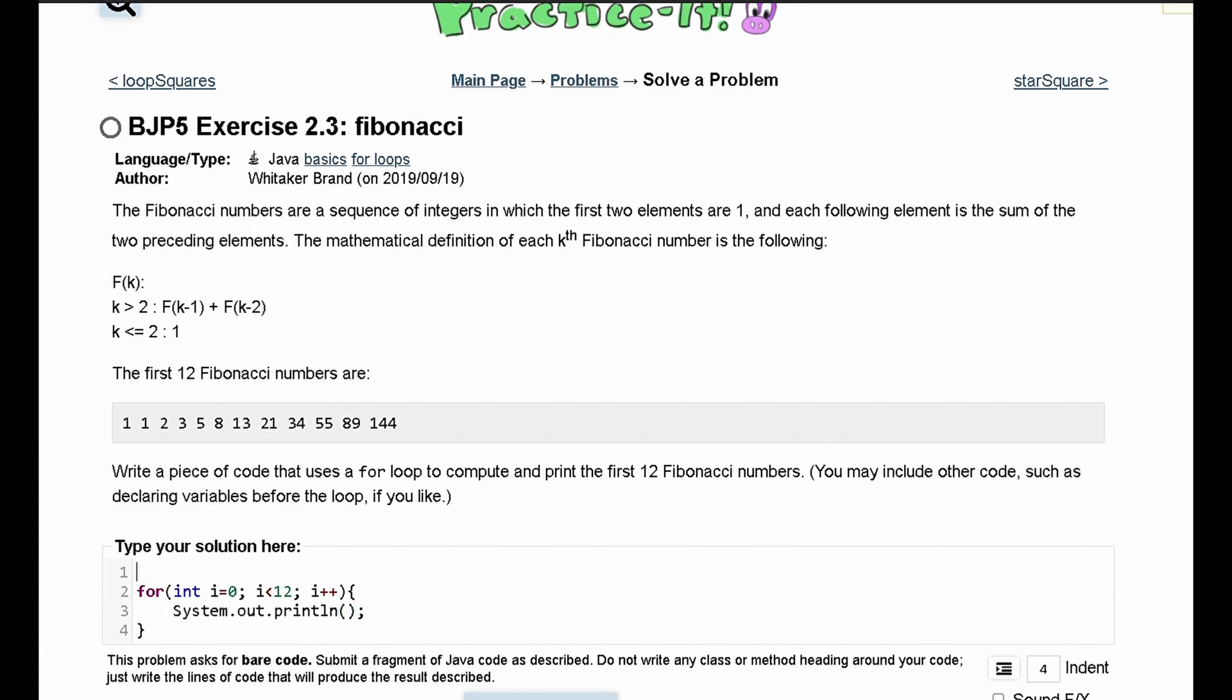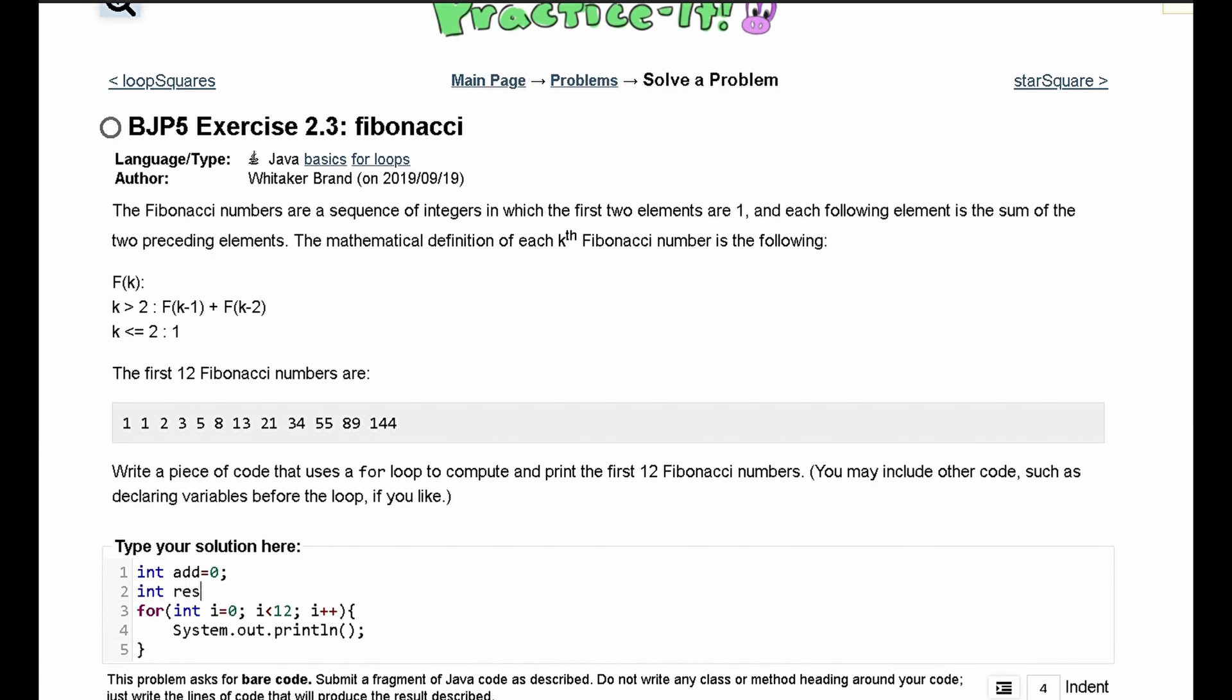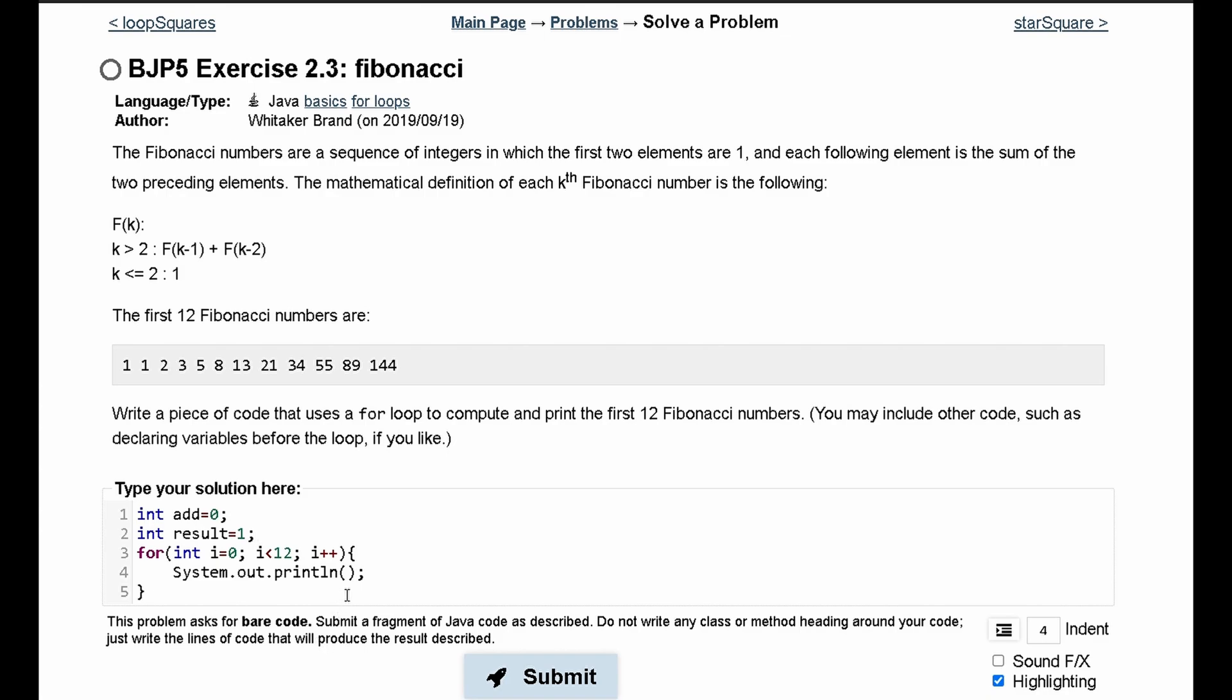So we're going to need to declare two variables. We can call int add and we're going to set it equal to zero, and then we'll say int result and set equal to one. Then the first thing we're going to print out is our result, and since it's asking us for a space between each one and it wants it on the same line, we'll just do print instead of println.